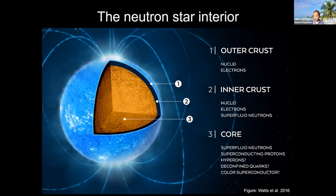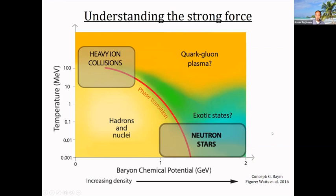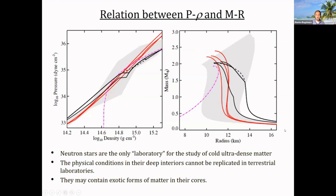The uncertainty in neutron star core composition stems from the fact that we don't really understand nuclear physics in that particular regime of low temperatures and high densities. But we can invert the problem — neutron stars occupy an interesting region of phase space, so by observing them with a variety of techniques we can in principle deduce the behavior of matter in this regime. As others have mentioned, that's possible because there's a mapping between the mass-radius relation of neutron stars and the pressure-density relation of matter. We can use neutron stars as astrophysical labs to study cold dense matter.